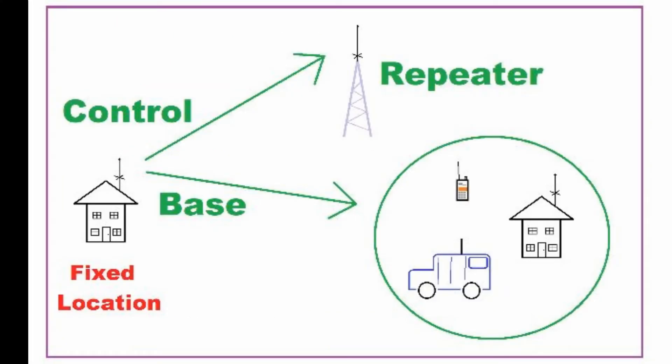Let's focus on the little house on the left. Obviously, a house is a fixed location. So when that station talks through a repeater, it's considered a control station. Because the input signal is causing the transmitter to turn on and transmit on the other frequency, you're controlling the repeater. Now under the rules, it doesn't consider a mobile or a handheld to be a control station when talking through a repeater.